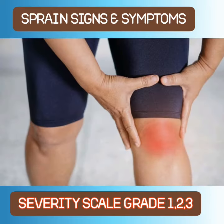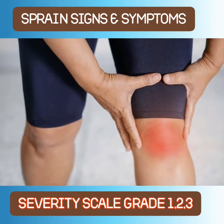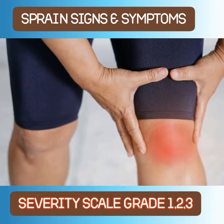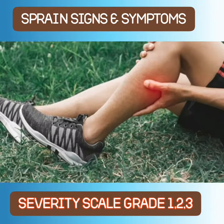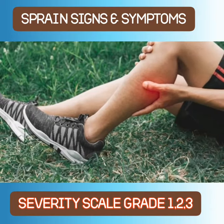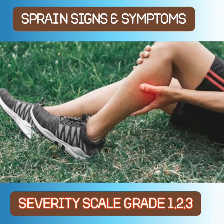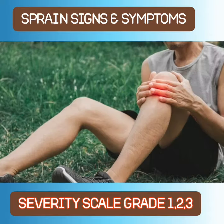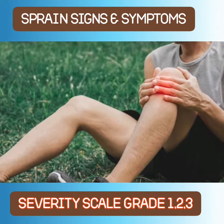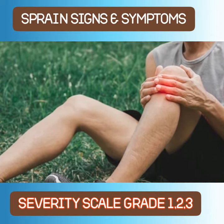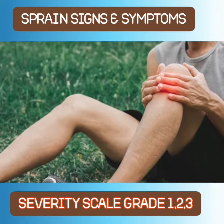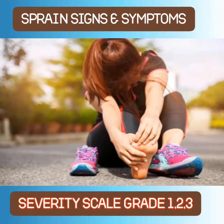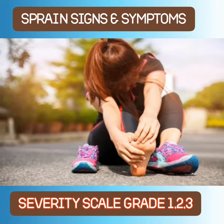Grade 2: A grade 2 moderate sprain causes partial tearing of the ligament and is characterized by bruising, moderate pain, and swelling. A person with a moderate sprain usually has some difficulty putting weight on the affected joint and experiences some loss of function.